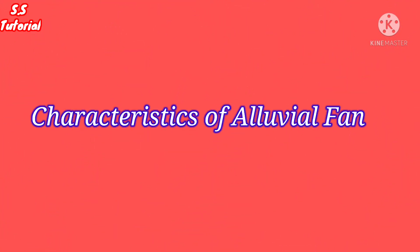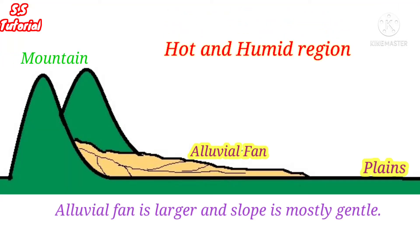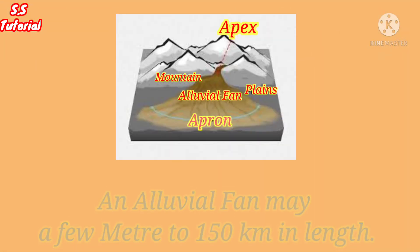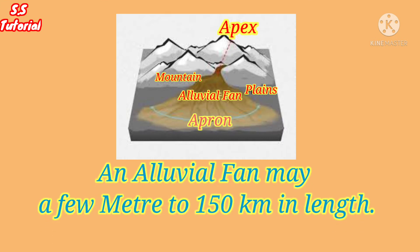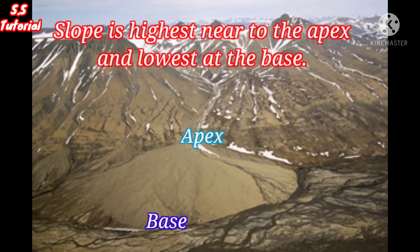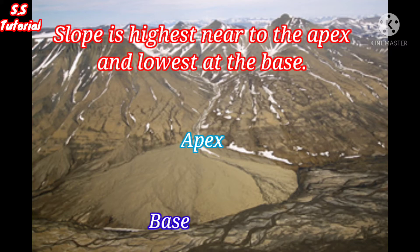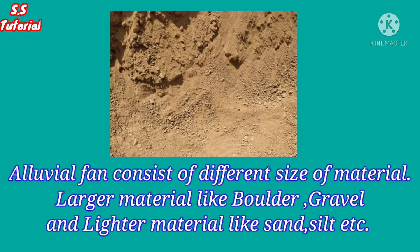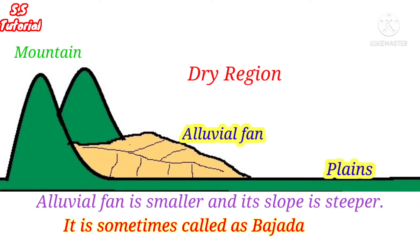Let's know some characteristics of an alluvial fan. In hot and humid regions, alluvial fans are well organized, so slope decreases along the length of an alluvial fan. Alluvial fans may range from only a few meters across at the base to as much as 150 kilometers across. The slope of an alluvial fan may vary from 1.5 degrees to 25 degrees. The slope is steepest near the apex and is concave there. Alluvial fans consist of different sizes of material, grading from high to low degree from the apex to the base. In dry climatic regions, alluvial fans are not organized, so the slope is steeper.